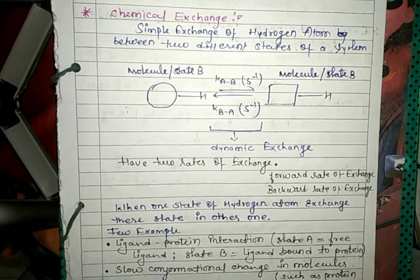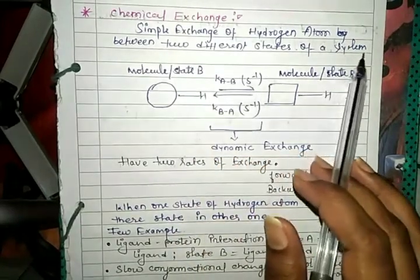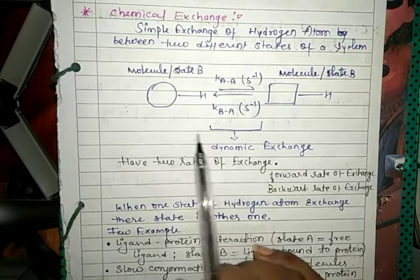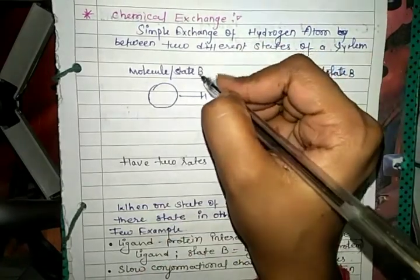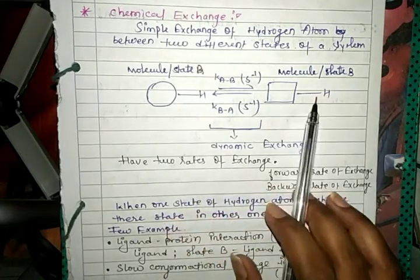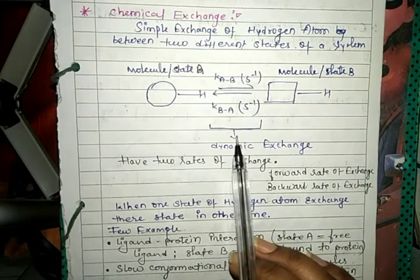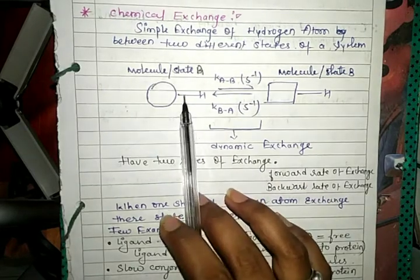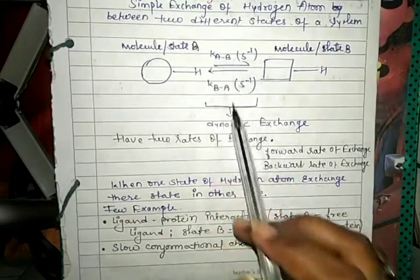Welcome to Technology Academy, where we discuss different topics of chemistry. Today's topic is chemical exchange. Chemical exchange is the simple exchange of a hydrogen atom between two different states of a system. There is a diagrammatic definition: molecule A and molecule B have two states — state A and state B — and exchange of hydrogen takes place from state A to state B. This whole process is called chemical exchange. The rate of this exchange is called dynamic exchange.